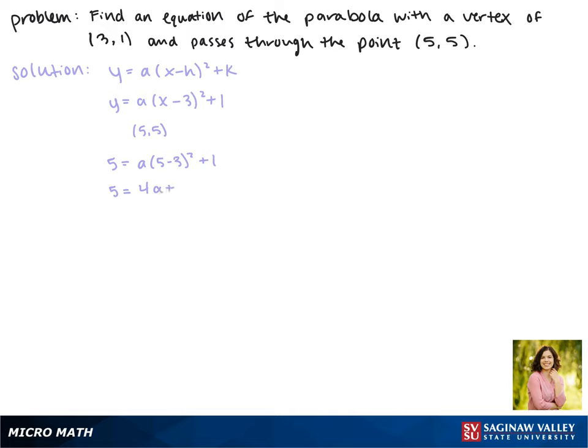2 squared is 4, so this gives us 5 equals 4a plus 1. Subtracting one from each side, we get 4a equals 4, so a equals 1.